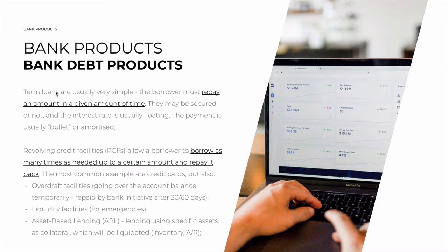Starting with term loans — these are usually very simple. The borrower must repay an amount in a given amount of time, known as the principal of the loan — for example, 5 million, 50 million, whatever it is. They may be secured or not, short-term or long-term, anything from 1 year to 10 or 20 years. The interest rate is usually floating — it changes when the interbank rate it's based on changes, such as LIBOR or EURIBOR.